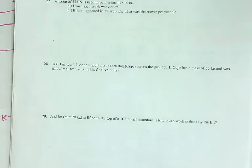700 joules of work done to pull a stubborn dog Cujo across the ground. Cujo's mass is 55 kilograms, and he's initially at rest. What's his final velocity?